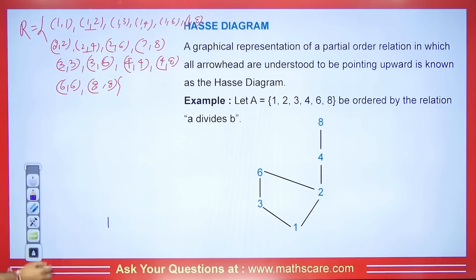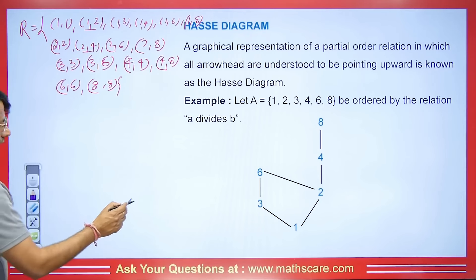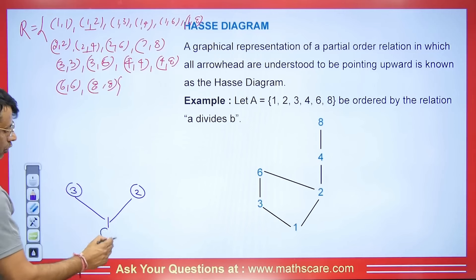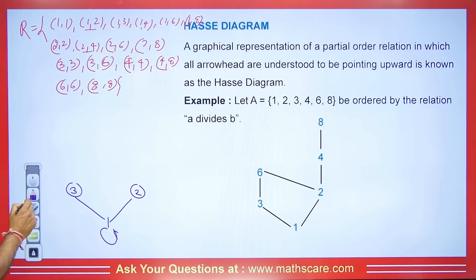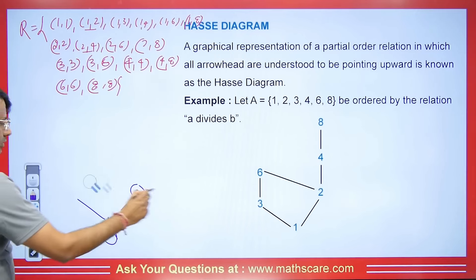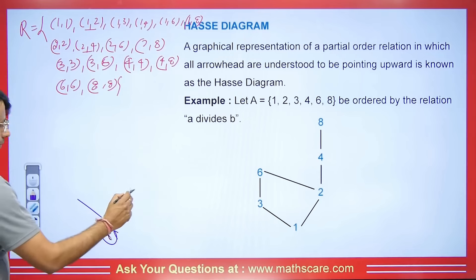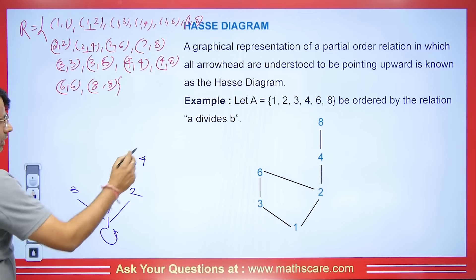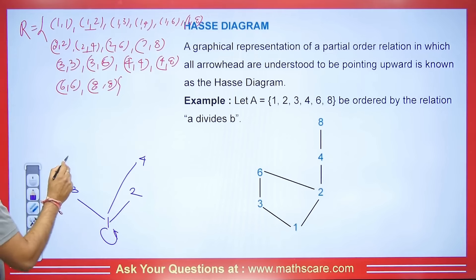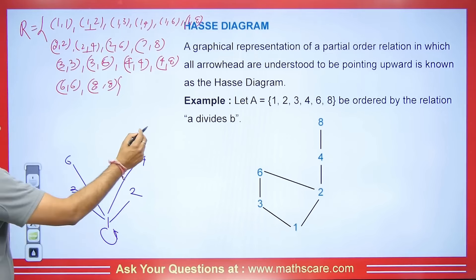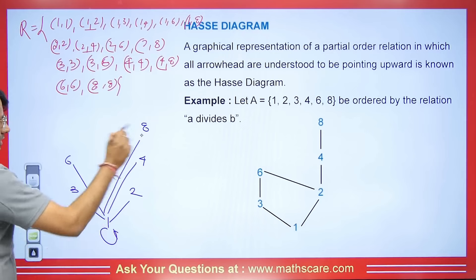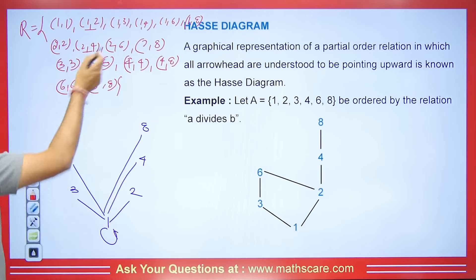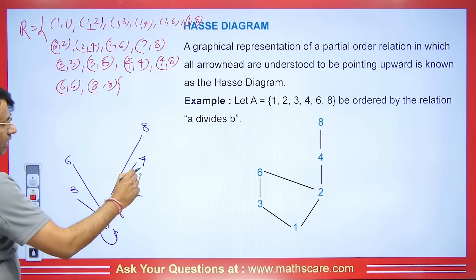Now let's understand how to draw a Hasse diagram. 1 is dividing 2 and dividing 3. 1 is dividing 4, 1 is also dividing 6, and 1 is also dividing 8. For 2: 2 is dividing 4, 2 is dividing 6, and 2 is dividing 8.